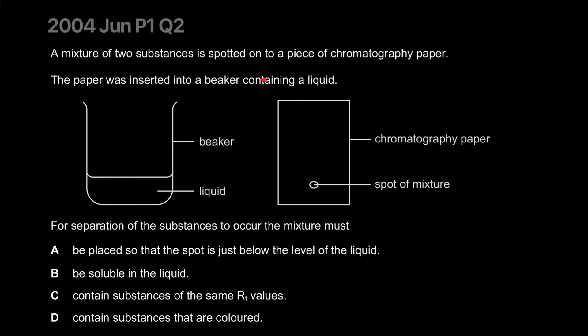A mixture of two substances is spotted onto a piece of chromatography paper. The paper was inserted into a beaker containing a liquid. For separation of the substances to occur, the mixture must be placed so that the spot is just below the level of the liquid.